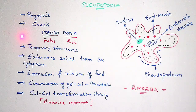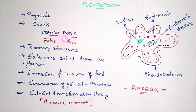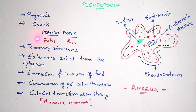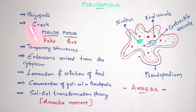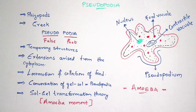Pseudopodium is extracted from a Greek word. What does pseudo mean? Pseudo means false, and Podia means foot. So it is a temporary structure. If instead of false there were a true, then it would not be a temporary structure — it would become a permanent structure. Because it is false, it becomes a temporary structure. So Pseudopodium is a temporary structure.